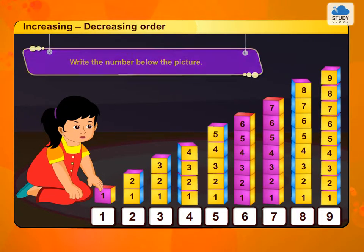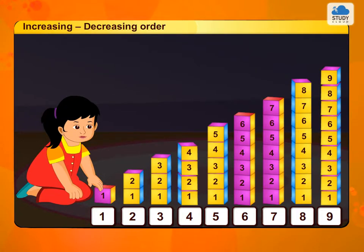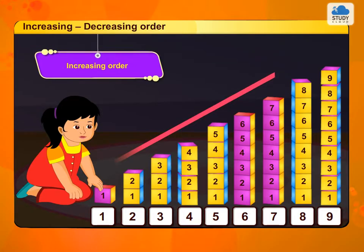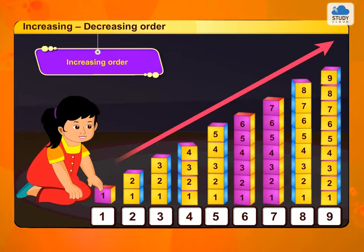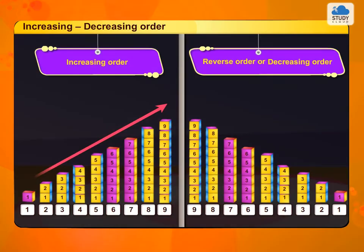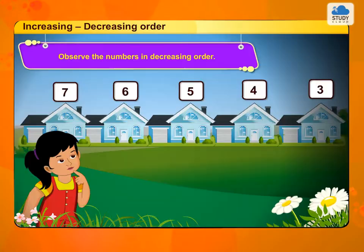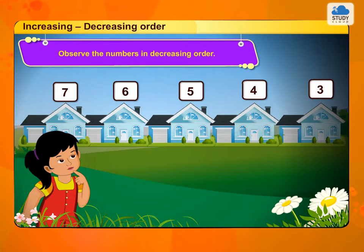We have learnt the numbers from 1 to 9 in increasing order. We can write these numbers in reverse, or decreasing order. Observe the numbers in decreasing order.